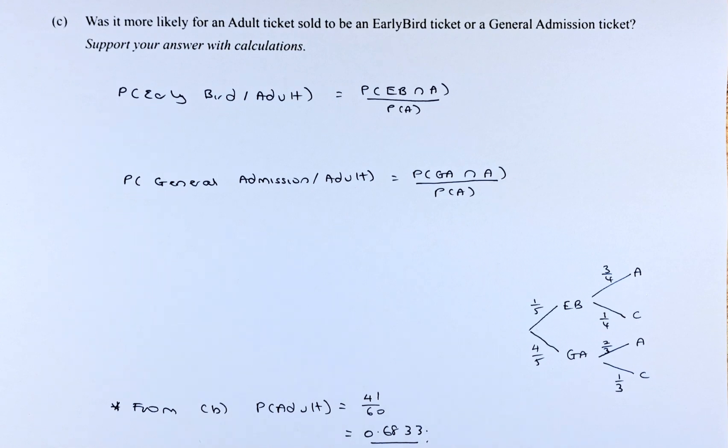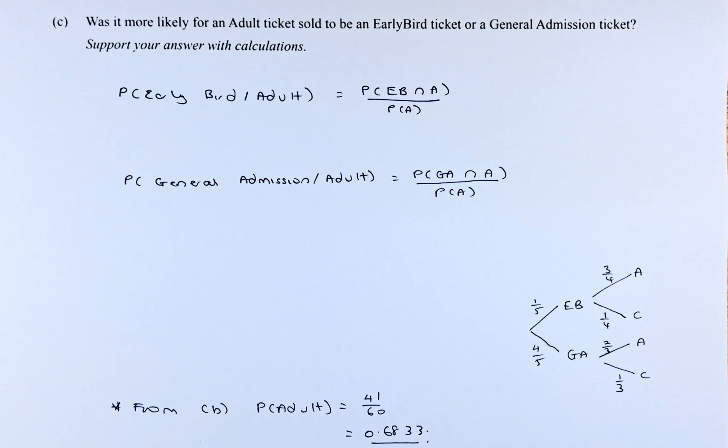The question reads: Was it more likely for an adult ticket sold to be an early bird ticket or a general admission ticket? Support your answer with calculations. We have to get information from the previous two parts.